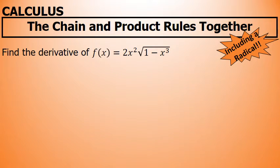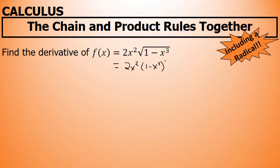I'm taking the derivative of f(x) = 2x² times the square root of 1 minus x to the third. You have to realize that this is a product where 2x² is the first factor and (1 minus x³)^(1/2) is the second factor. When differentiating this second factor, the chain rule will be required.